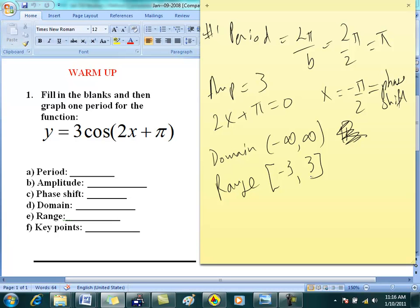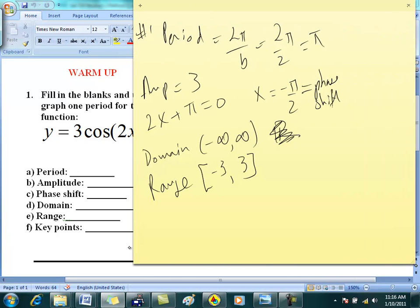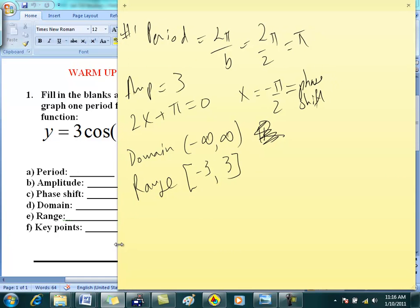And key points we'll get after we start graphing, okay? So in order to graph this, what we need is starting point. Okay, the function was 3cos(2x + π), okay? This is the function we want to graph, right?